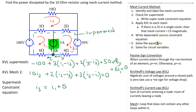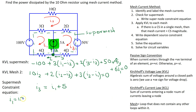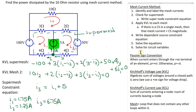This completes the process of writing the circuit equations. We have three variables — i1, i2, and i3 — and three equations, so we can solve them to find: i1 equals 1.75 amps, i2 equals 1.25 amps, and i3 equals 6.75 amps.